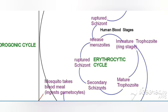The schizonts will contain 10 to 36 merozoites in the case of Plasmodium falciparum. Different species of Plasmodium have different numbers of merozoites per RBC, and counting the number of merozoites per RBC gives a clue in the identification of the parasite. The RBC filled with merozoites will break down, releasing the merozoites into circulation. Again, these merozoites will go and infect the RBC and continue the erythrocytic cycle.